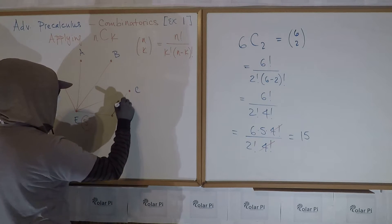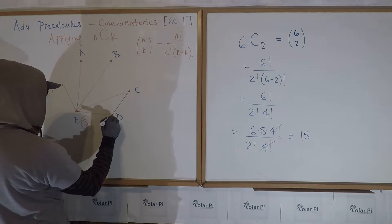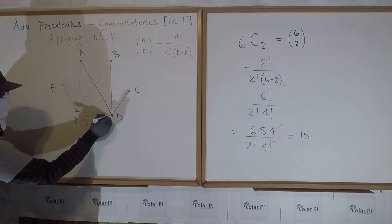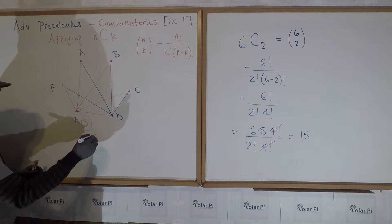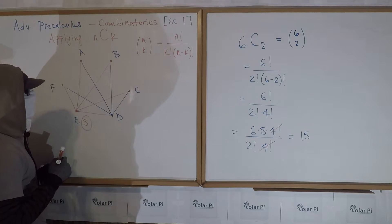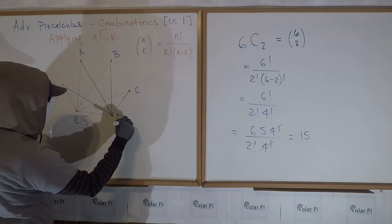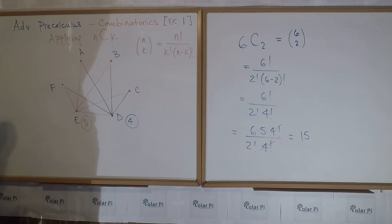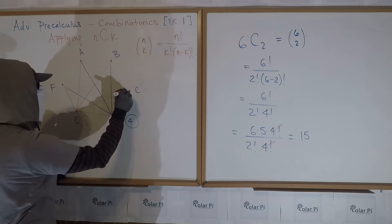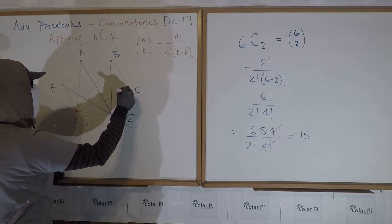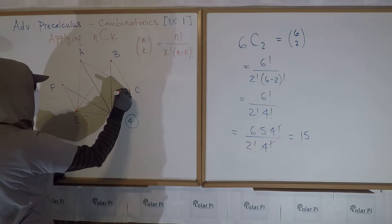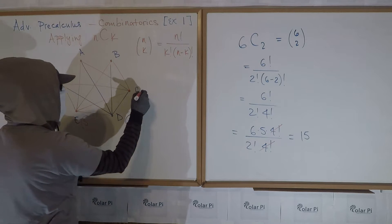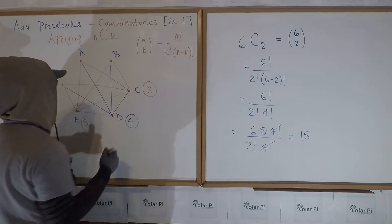From D I could do this — one. I could do this — two, three, four. So from D there are four. And then from C I could do this: two, three. So from C there are three.